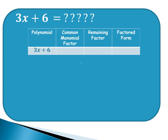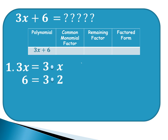Next is to find the common monomial factor. To get the common monomial factor, we are going to factor out the two terms in the given. The first term is 3x. The factors of 3x are 3 times x. The second term is 6. The factors of 6 are 3 times 2. After getting the factors of the two terms, let us look for the common factor between 3x and 6. As we can see, 3 is common. Therefore, the CMF or common monomial factor is 3.